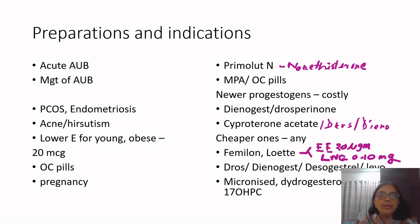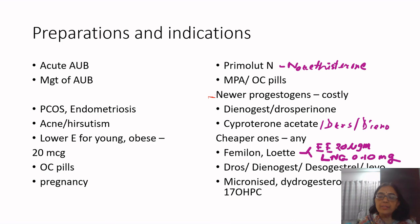For clinical scenarios: acute AUB — use norethisterone. Longer-duration AUB management over three to six cycles — use MPA or oral contraceptive pills, preferring pills containing newer progestogens. PCOS and endometriosis — prefer dienogest or drospirenone, which are cardioprotective, especially when treatment is needed for longer duration, to avoid adverse metabolic effects on lipid or carbohydrate metabolism. Cost and patient affordability are important factors.